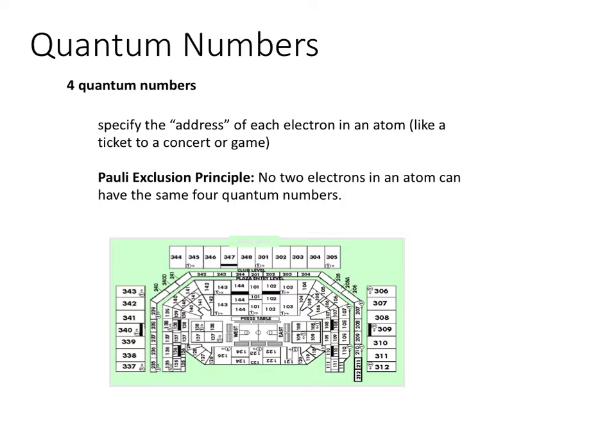Our addresses may be similar — we may live on the same street, same zip code — but we have different house numbers or apartment numbers. In that same way, electrons in an atom will have four quantum numbers, and they're going to be unique. No two electrons will have all four being exactly alike.